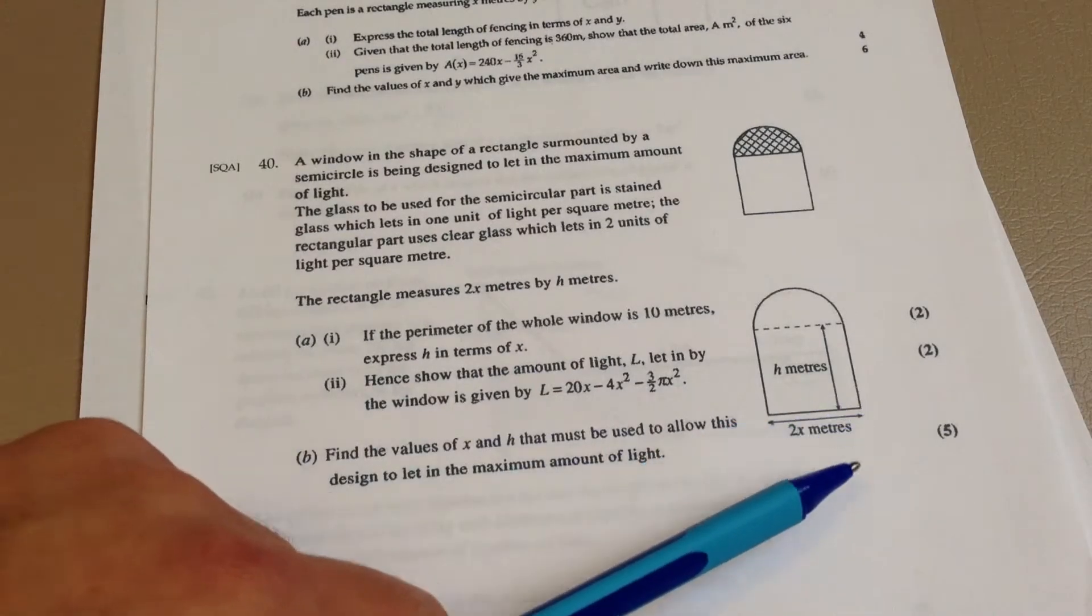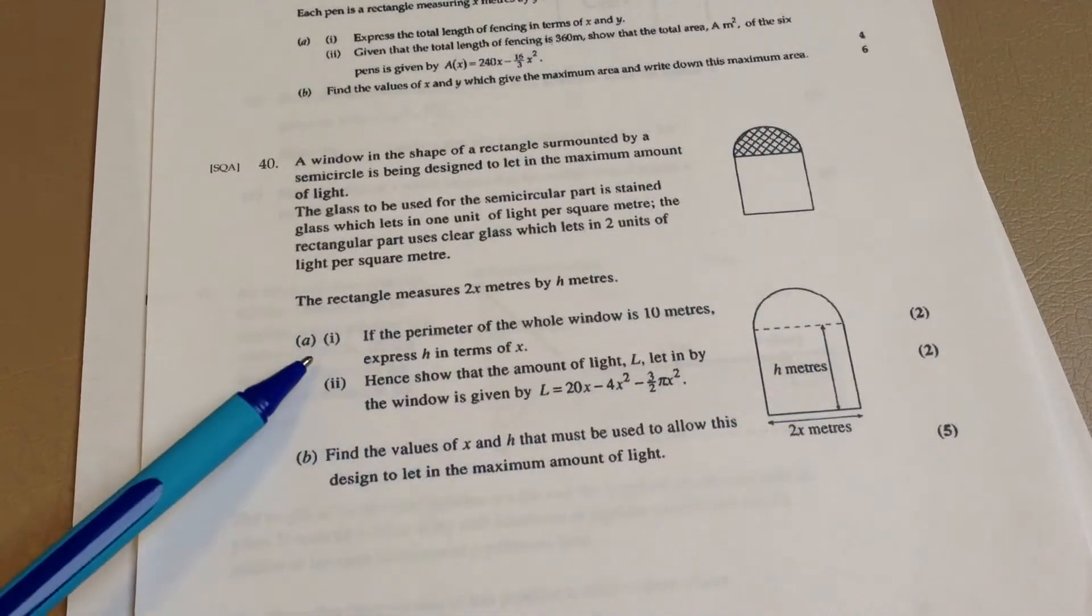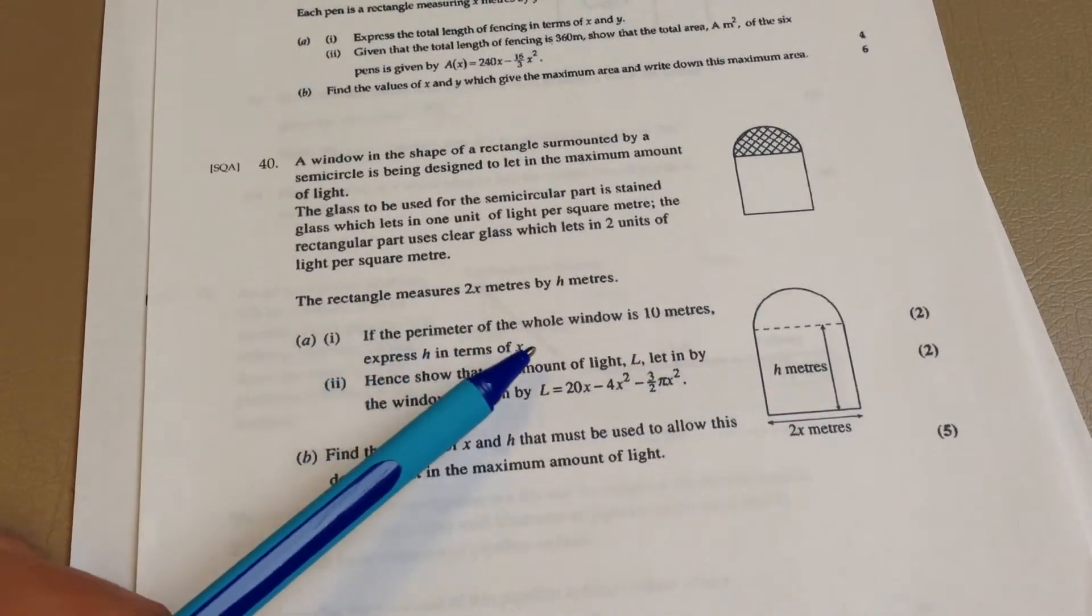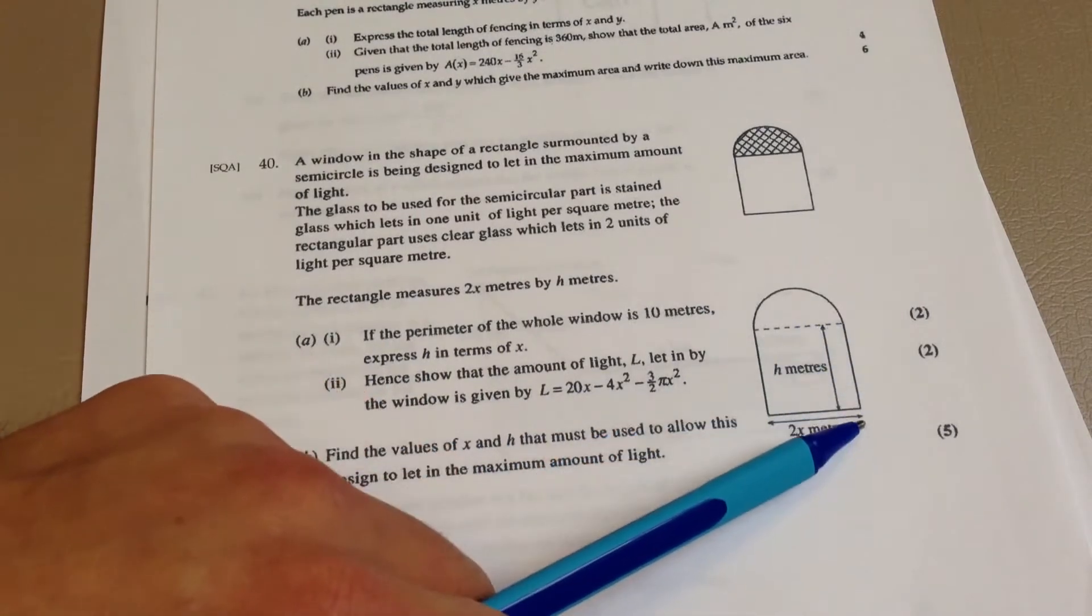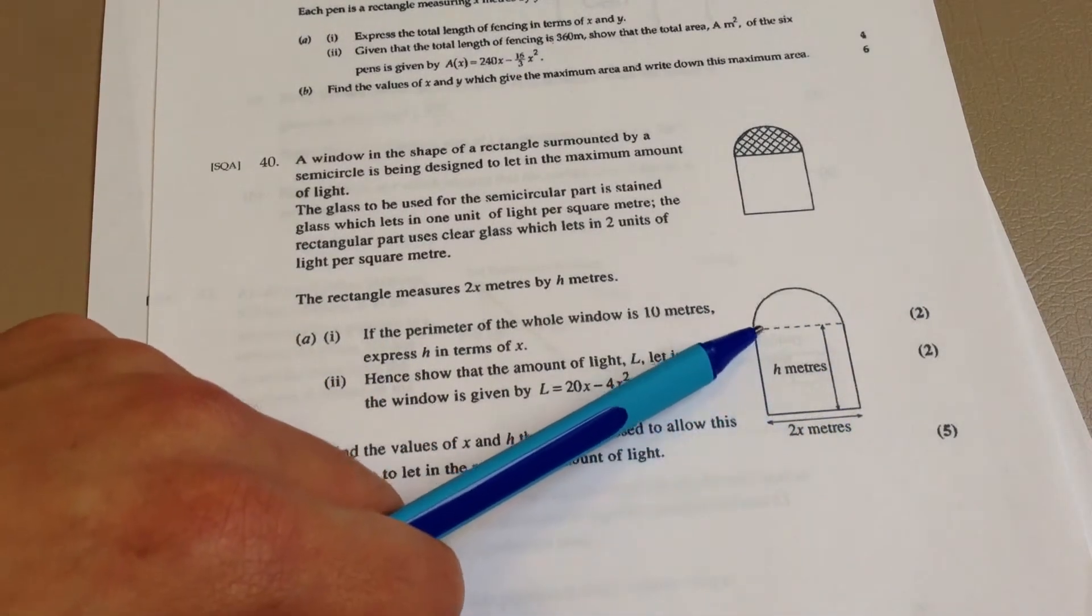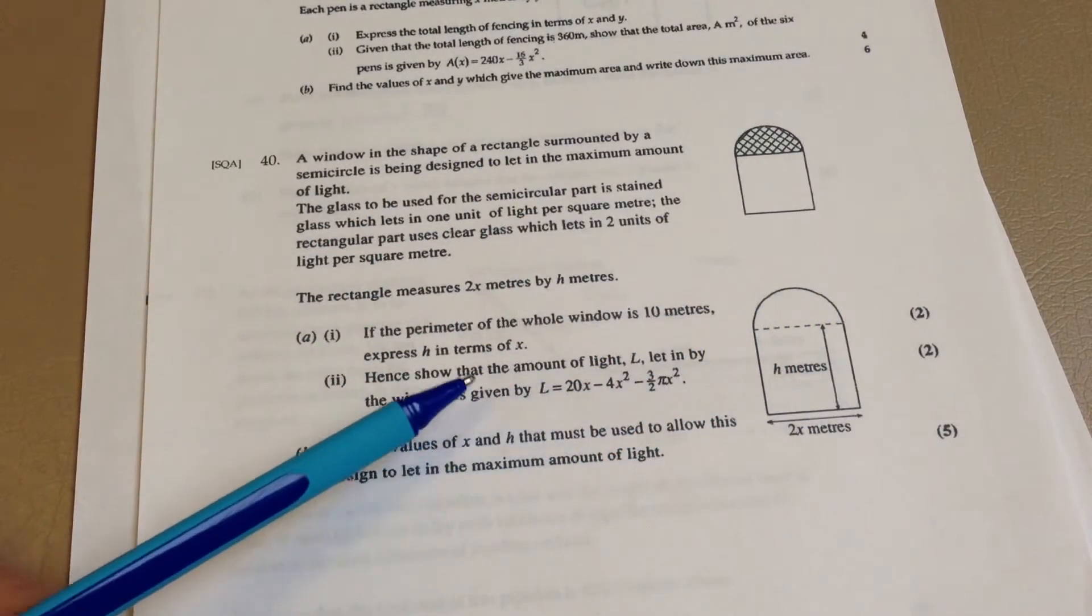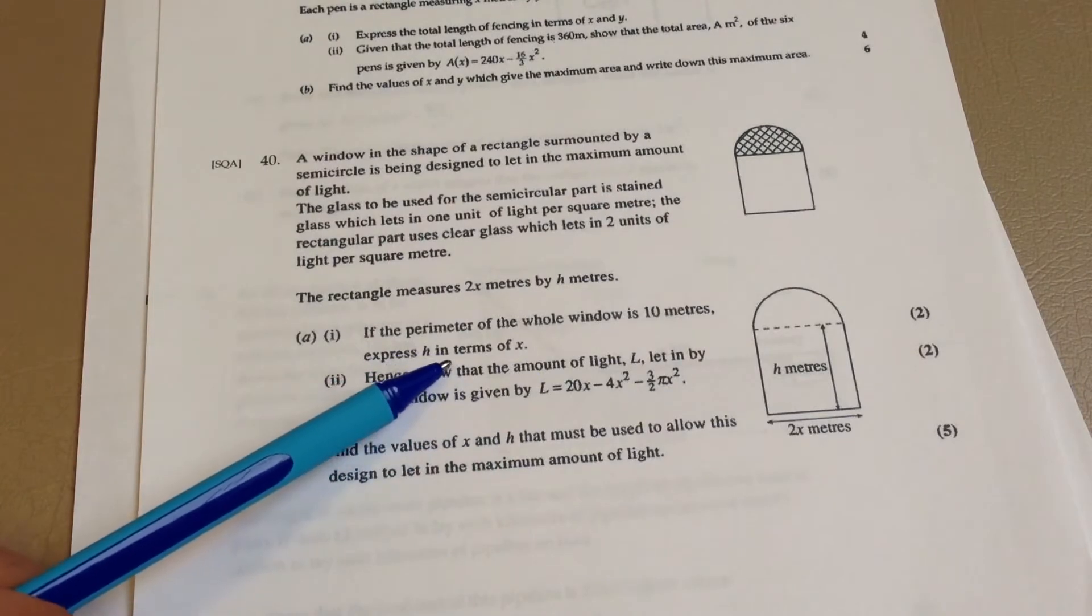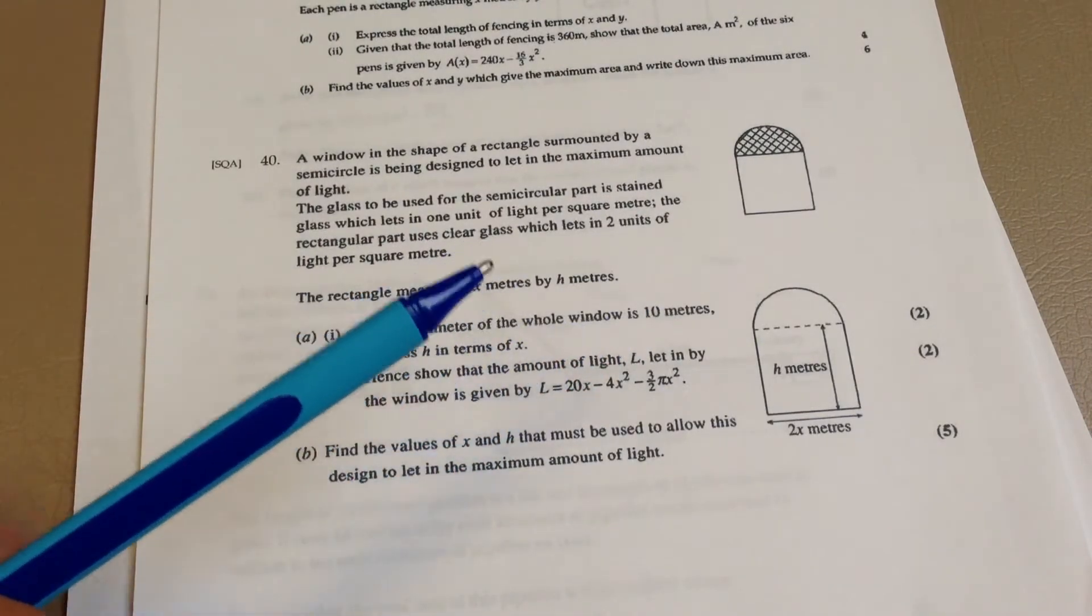Now the rectangle measures 2x metres by h metres. Now part one. If the perimeter of the whole window is 10 metres, the perimeter will effectively be these three sides of the rectangle and the arc of the semi-circle. We've been told that that's 10 metres express h in terms of x.